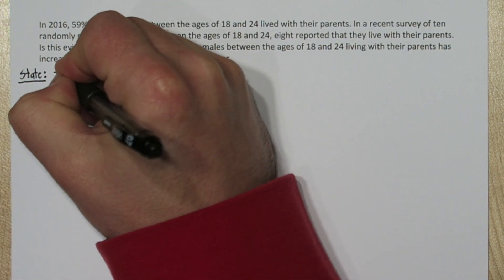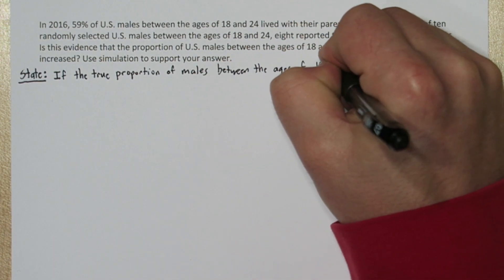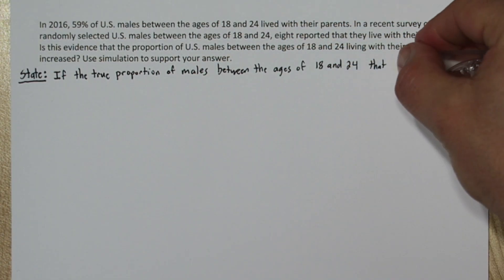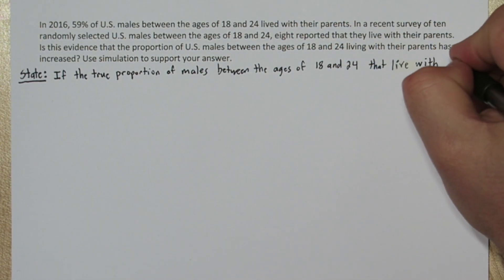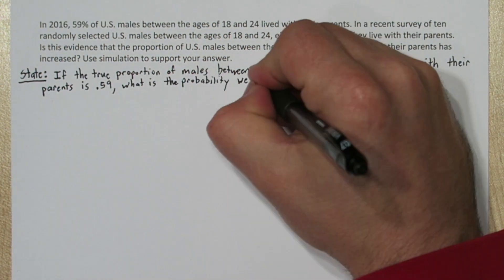We're going to use a four-step solving process to investigate this. First we need to state what we're trying to estimate. In this problem we're going to assume that the true proportion of males between 18 and 24 that still live with their parents is 0.59.